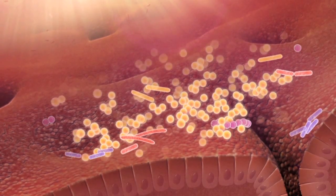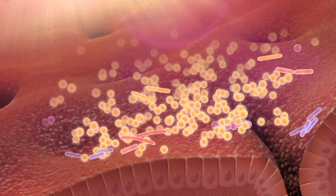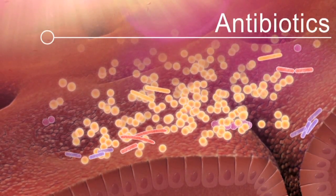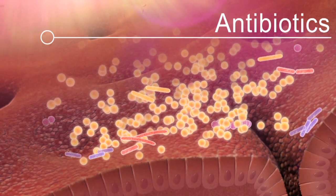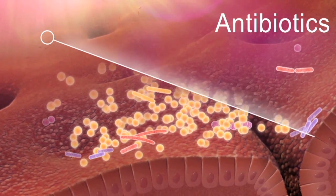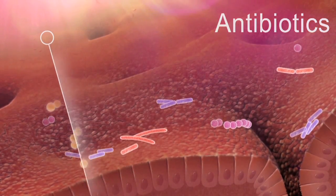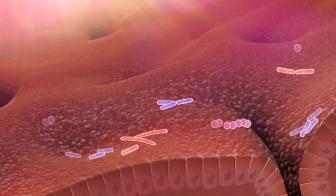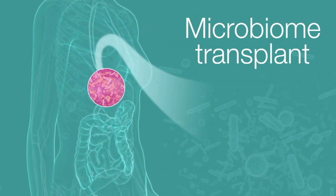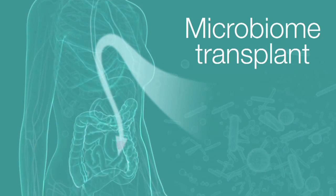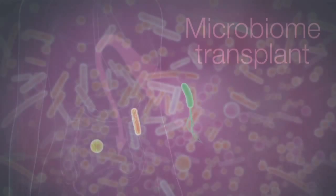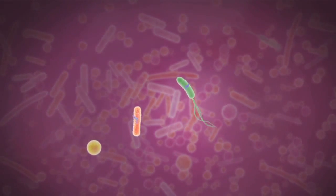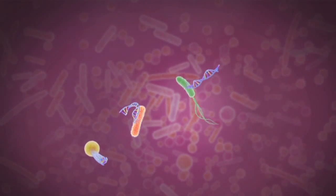This is similar to destroying a forest. One way to restore that is to take the healthy bacteria that normally live in the colon from a healthy person and reimplant those back into the colon of the sick person.